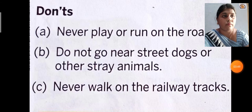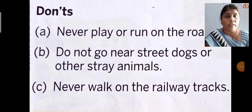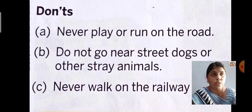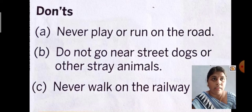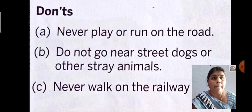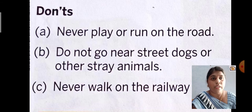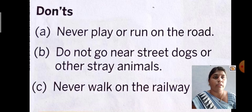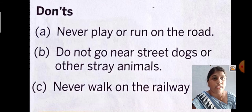Now the don'ts — things we should not do. Number A: never play or run on the road for our safety. Number B: do not go near street dogs or other stray animals. Stray animals are those which have no owner and are wandering on the road. We should not go near them because they are dangerous and can hurt us at any time.